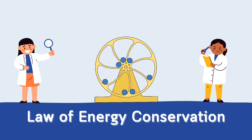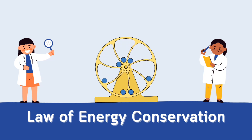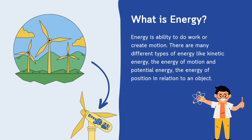Before learning the law of conservation, we must know what is energy. Energy is the ability to do work or create motion. There are many different types of energy, like kinetic energy — the energy of motion — and potential energy — the energy of position in relation to an object.